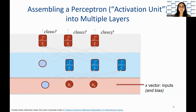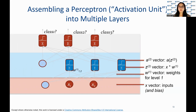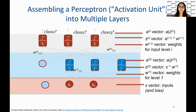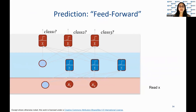Each neuron in the first hidden layer takes a weighted sum of the inputs and passes it through an activation function, such as a sigmoid or ReLU, to produce an output. The output of each neuron in the first hidden layer is passed as input to each neuron in the second hidden layer, and so on until we reach the output layer. The output layer produces a vector of values, each representing the probability of the input belonging to a certain class. The class with the highest probability is chosen as the predicted class for the input.